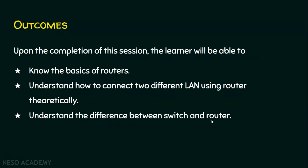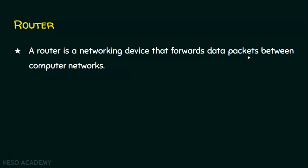A router is a networking device that forwards data packets between computer networks — specifically, two different local area networks. When two different local area networks want to communicate with each other, they need a router. For example, a LAN using IP addresses starting with 10 cannot communicate with a LAN starting with 200 using switches alone, because switches connect devices belonging to the same network. Routers solve this problem.